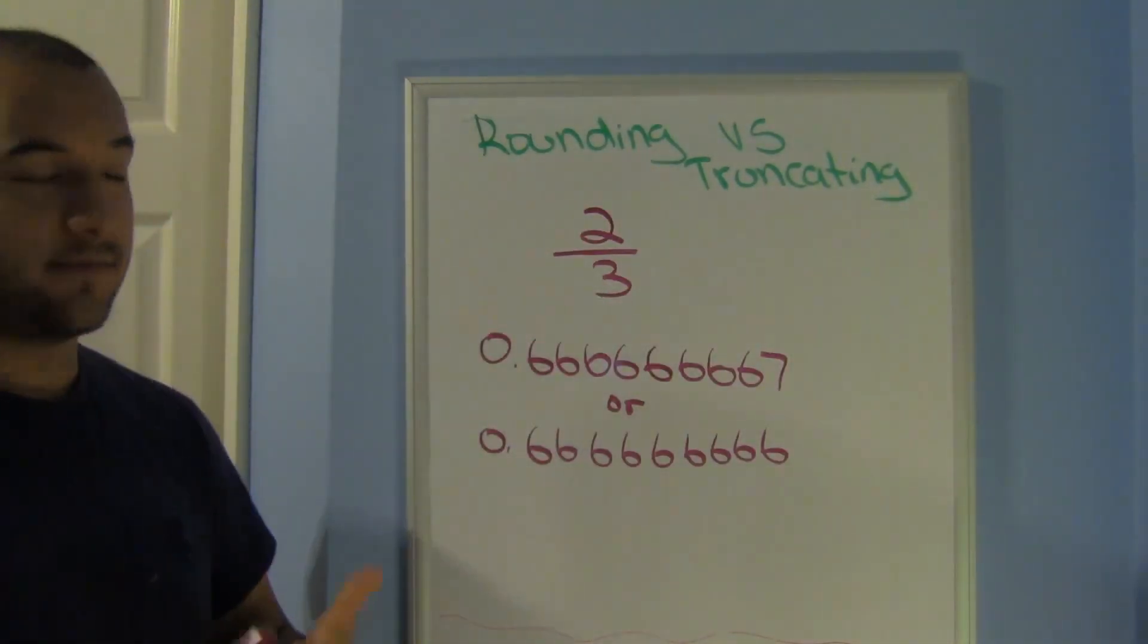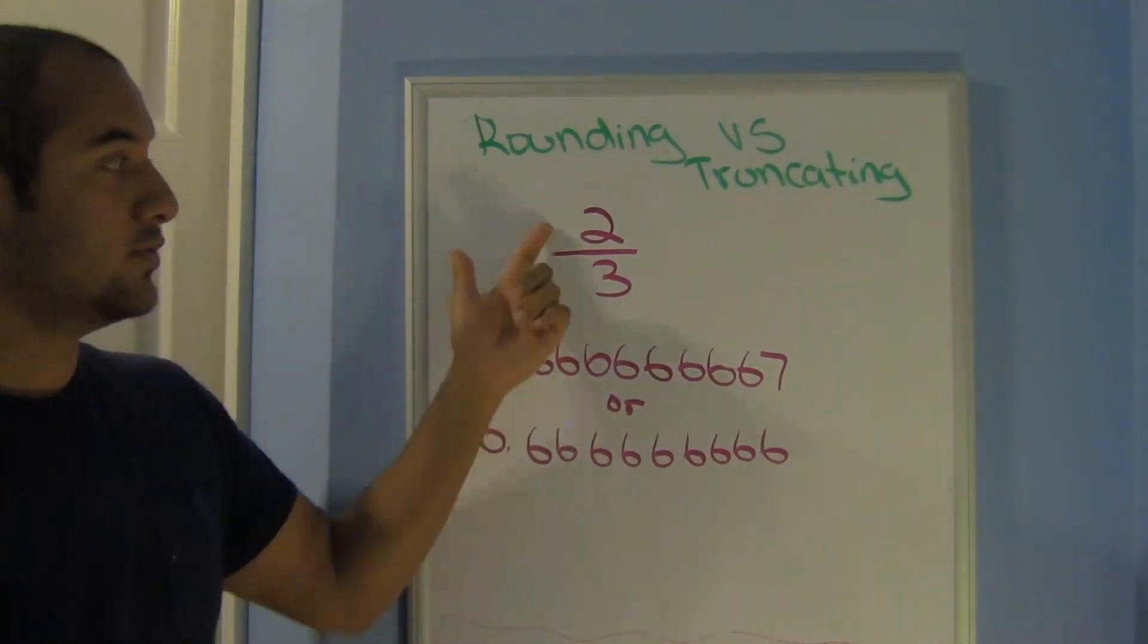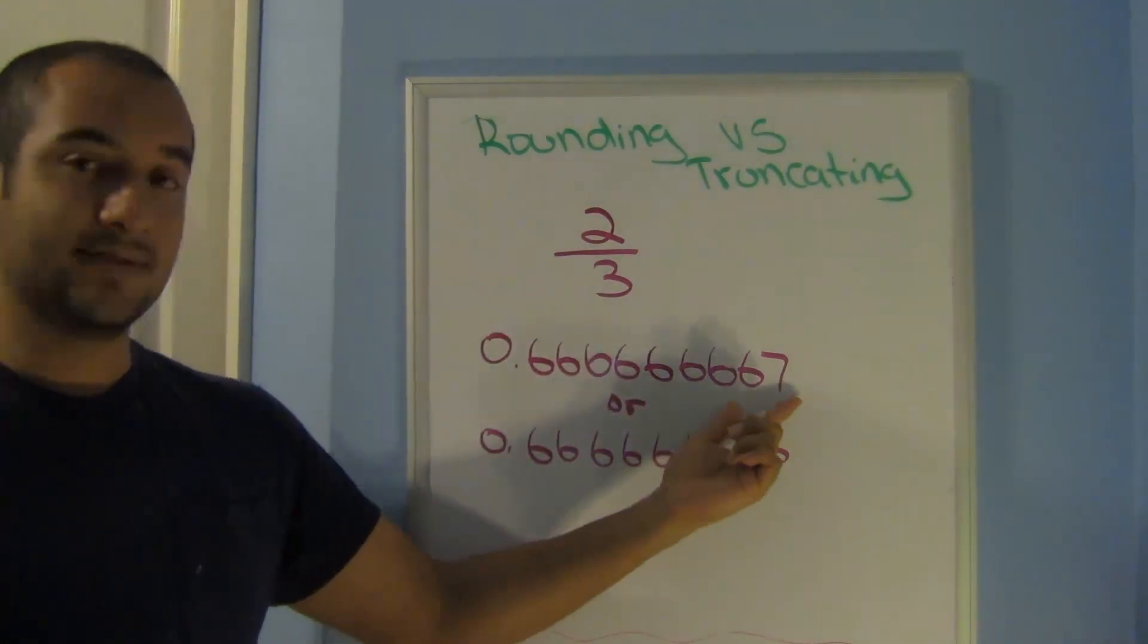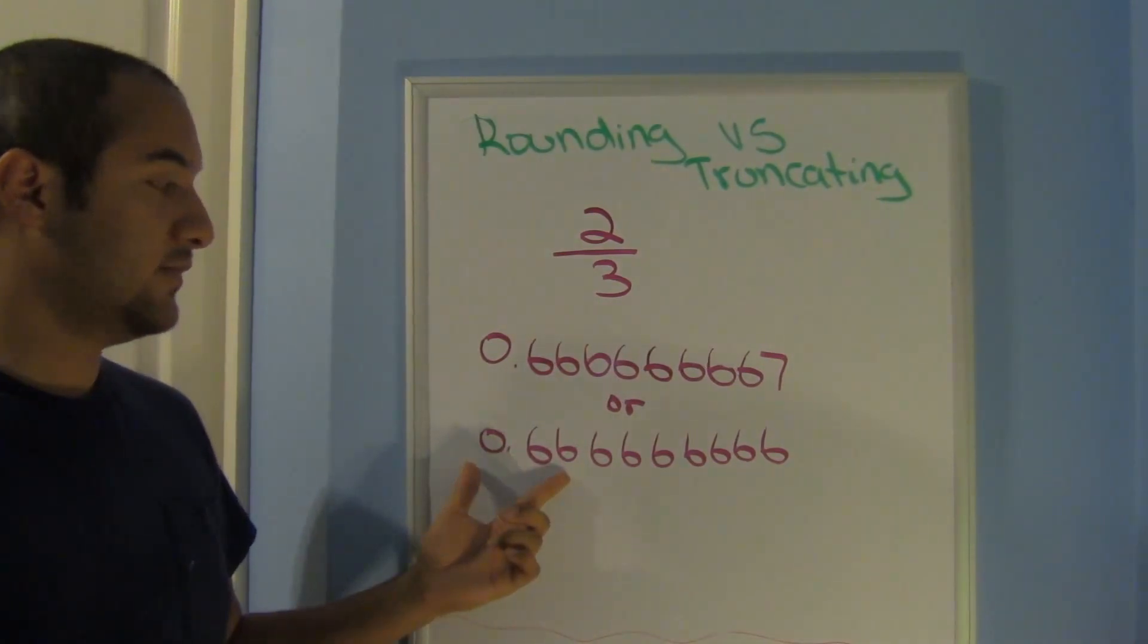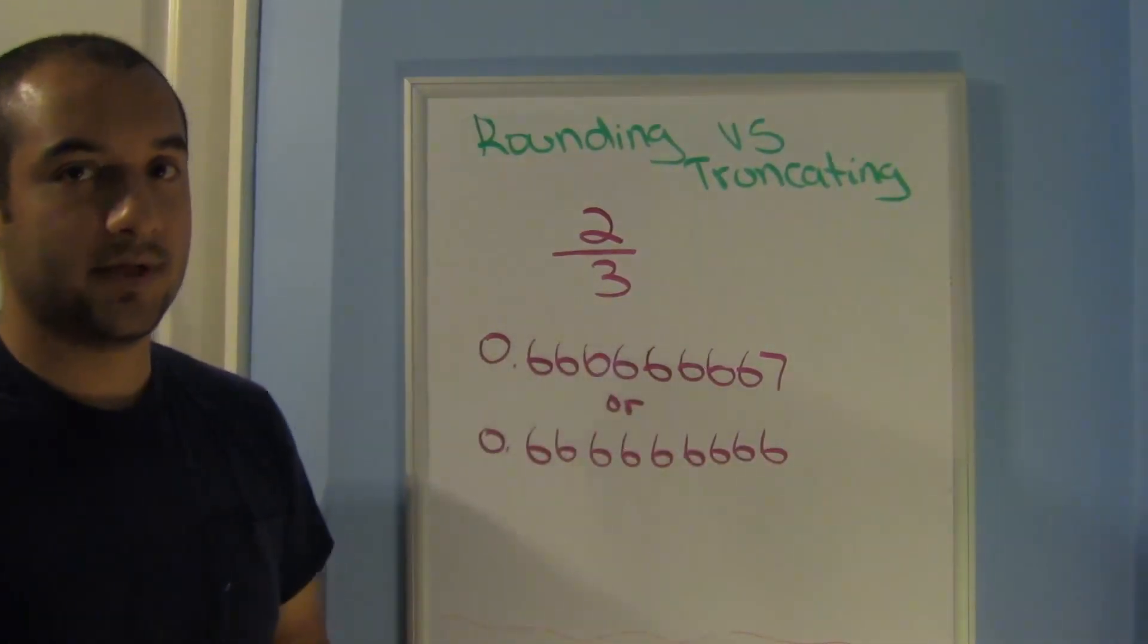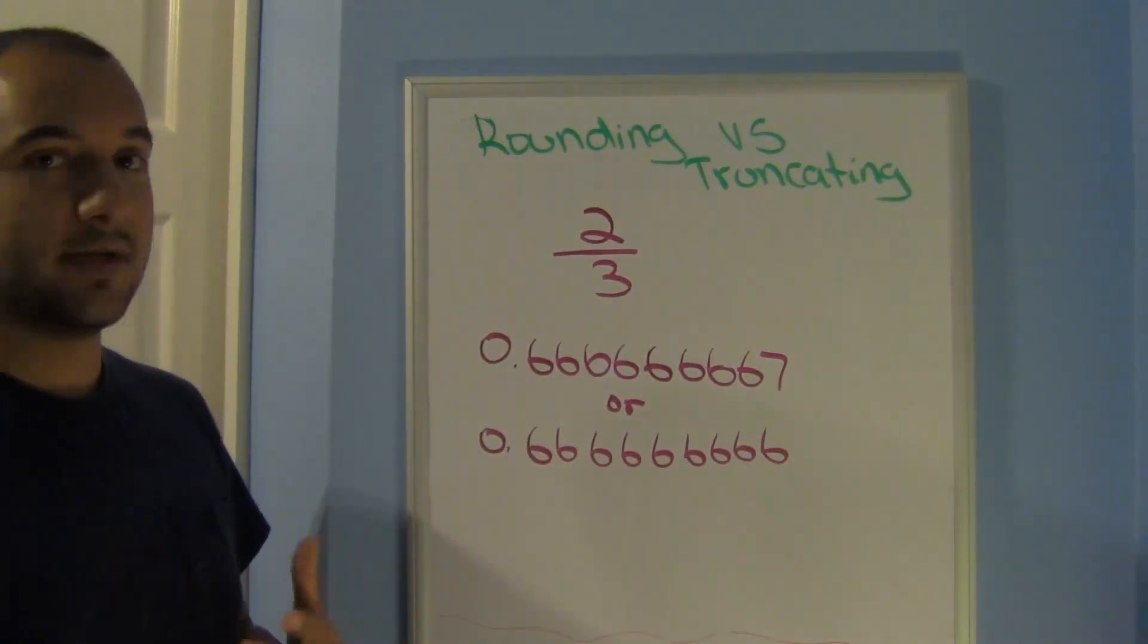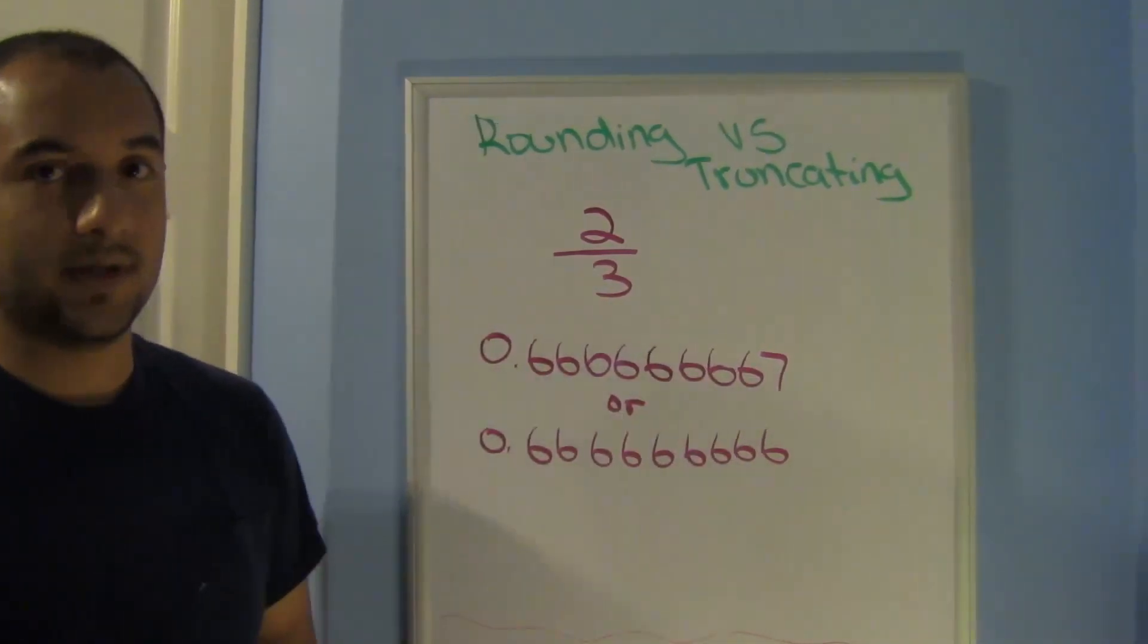A fast way to check if your calculator rounds or truncates is by doing 2 divided by 3. If at the edge of your screen you see a 7, that means that your calculator rounds. If you see that it ends with 6s, that means that your calculator truncates. Remember, your calculator can't do everything, but it will try to give you the most exact answer. And like I said, it's either going to round or it's going to truncate.